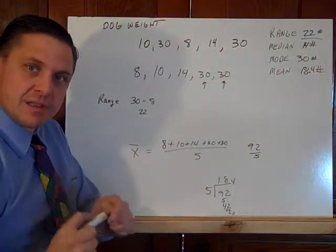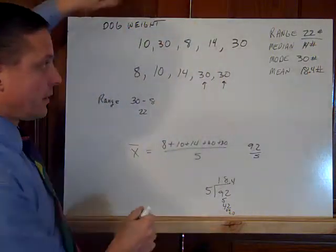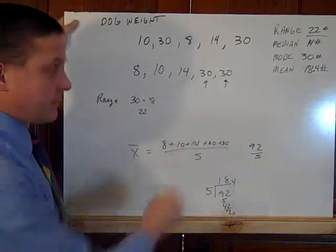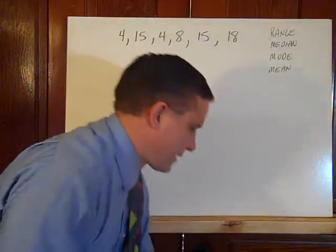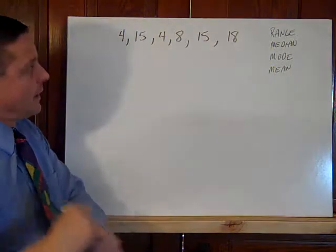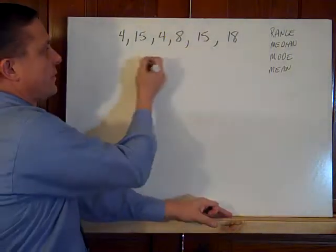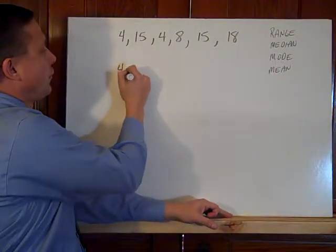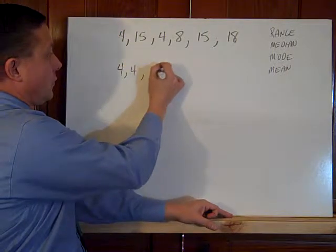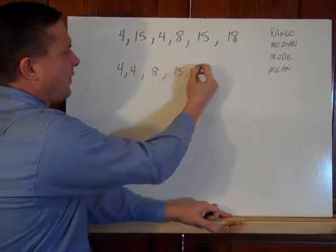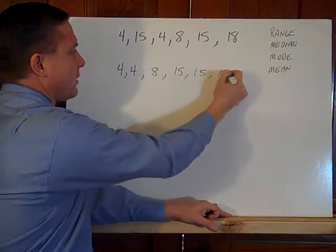And we just found the range, the median, the mode, and the mean for a set of numbers. Now, if we do another set of dog weights later on, then we have this. So now I have two small dogs, very small dogs. And if I put it in descending order: 4, 4, 8, 15, 15, 18. Six numbers.